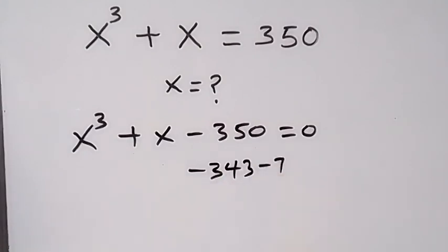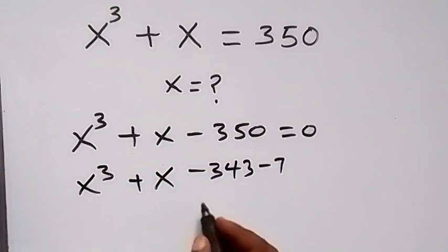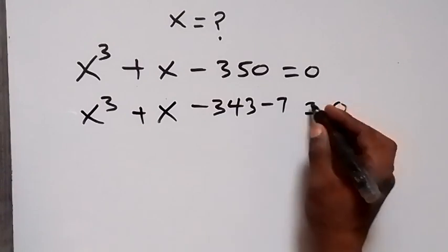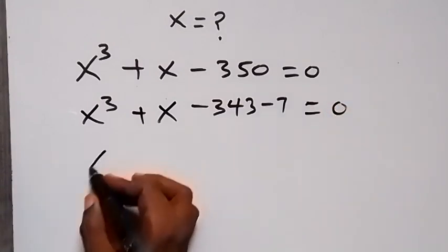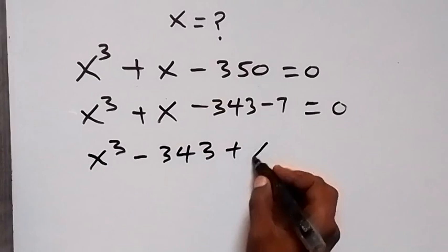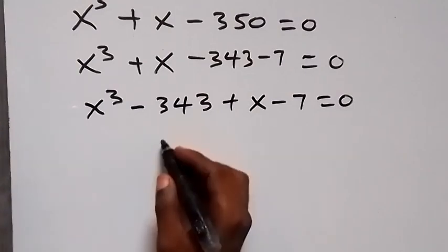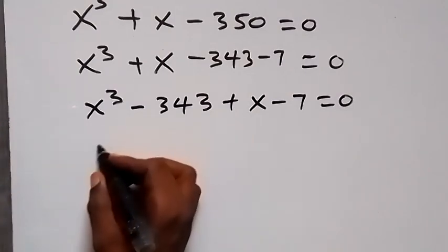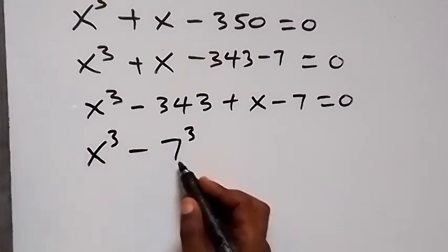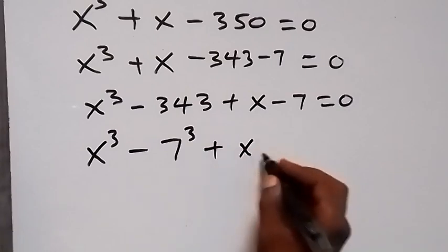From here we can separate minus 350 as minus 343 then minus 7. So this becomes x cube plus x minus 343 minus 7 equals to 0. Rearranging, we have x³ minus 343 plus x minus 7 equals to 0. We can rewrite 343 as 7 raised to power 3, since 7 times 7 times 7 gives us 343.